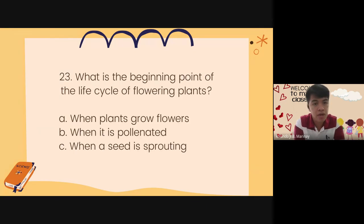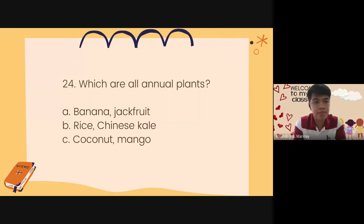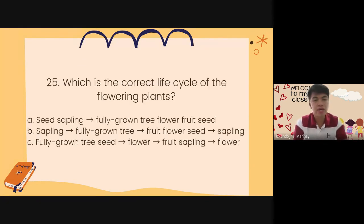Number 23. What is the beginning point of the life cycle of flowering plants? A. When plants grow flowers. B. When it is pollinated. C. When a seed is sprouting. Number 24. Which are all annual plants? A. Banana, jackfruit. B. Rice, Chinese kale. C. Coconut, mango. Number 25. Which is the correct life cycle of the flowering plants? A. Seed, sapling, fully grown tree, flower, seed. B. From sapling to full grown tree to fruit flower seed to sapling seed. C. Fully grown tree, seed to flower to fruit, sapling to flower.